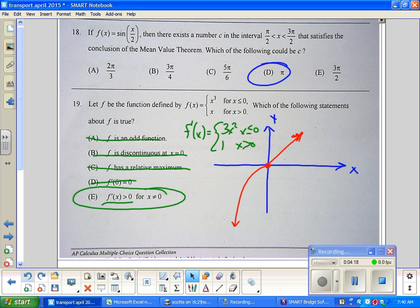You could also tell that from the derivative because you had 3x². Any value of x squared is going to be positive.